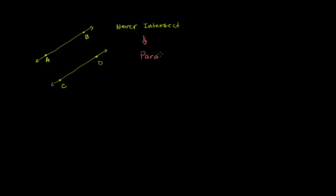If those two things are true — they're not the same line, they never intersect, and they can be on the same plane — then we say that these lines are parallel. They're moving in the same general direction, in fact the exact same general direction. From an algebraic point of view, we would say that they have the same slope but different y-intercepts.